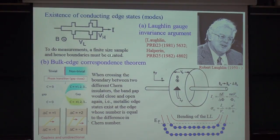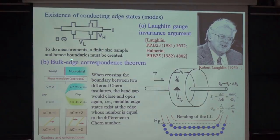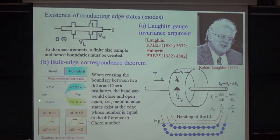There are different ways to see this. One is the so-called bulk-edge correspondence theorem. Because Thouless already pointed out that this quantum Hall system is topologically non-trivial, if one applies topology theory to electronic bands, when you move from one topological system to another, if the topological invariant numbers of the two systems differ, then the gap must close as we cross the boundary in order to enter the other system.